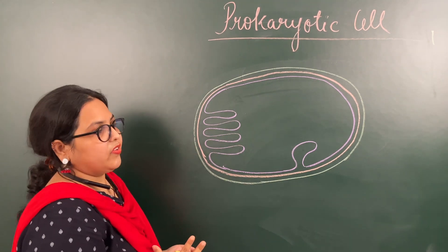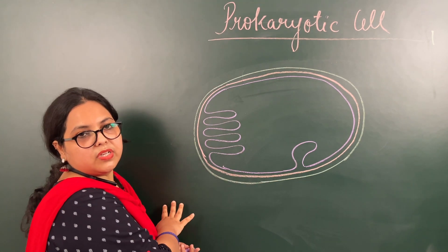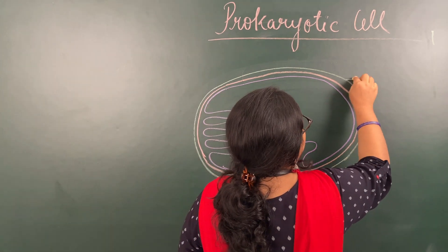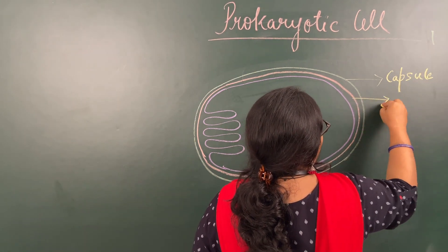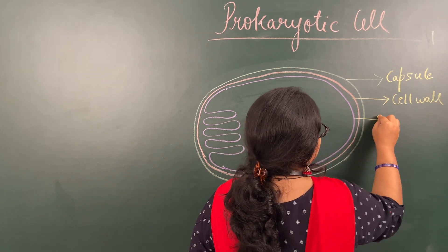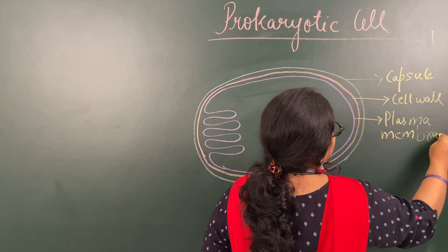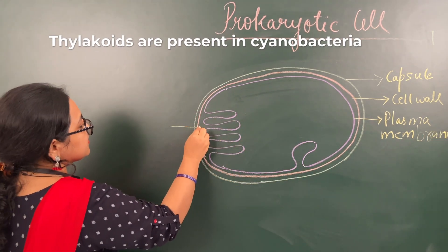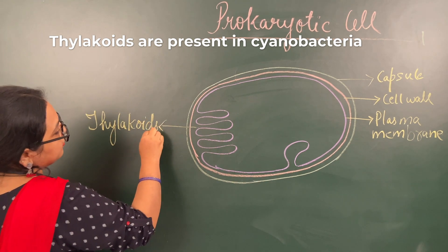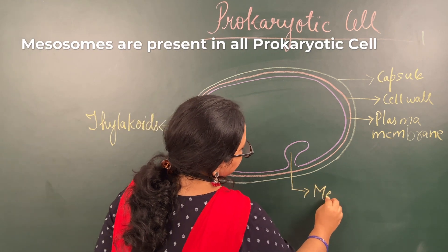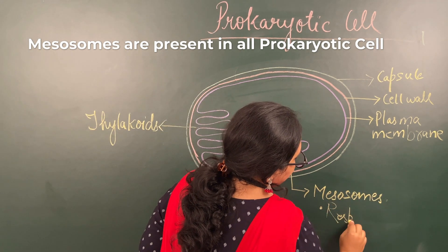The common name of cyanobacteria is blue-green algae. Now let us label these things — we will try to label everything on the right-hand side of the diagram. First is your capsule, second is your cell wall, third is your plasma membrane. Then these multiple layers are your thylakoids. And this infolding is your mesozome — it helps in respiration.